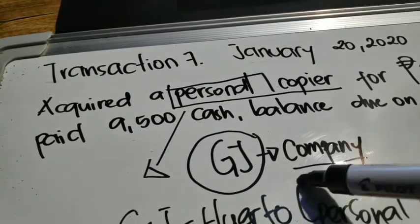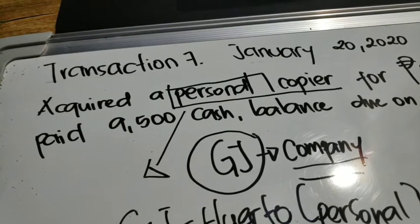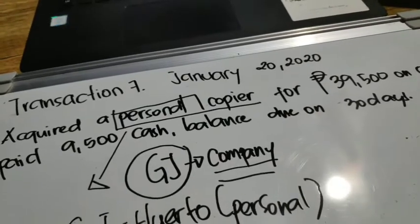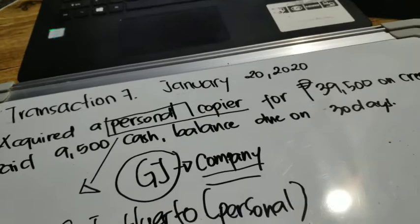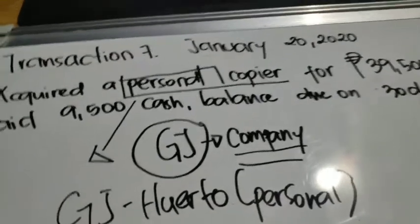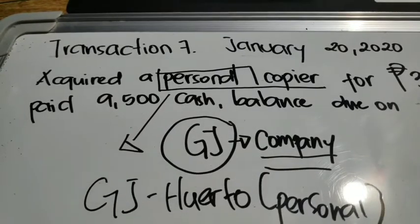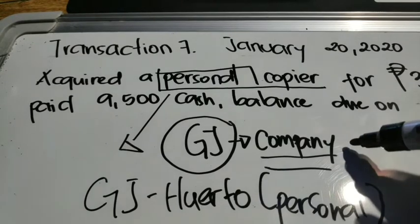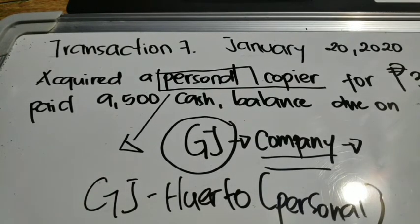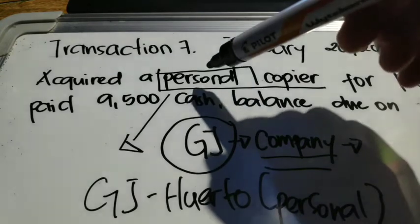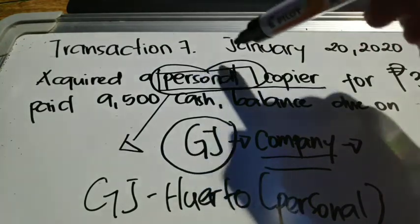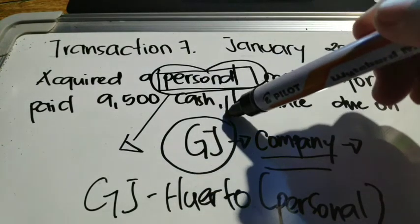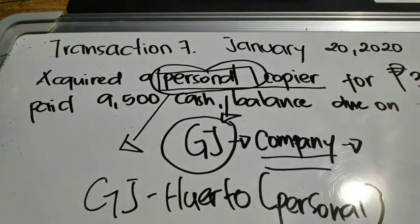However, if the transaction instead stated 'acquired a copier for 39,500 on credit, paid 9,500 cash, balance due in 30 days' — without the word 'personal' — it means the copier was bought for use by the company, and it would be recorded in the company's general journal.